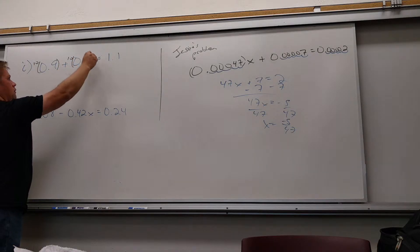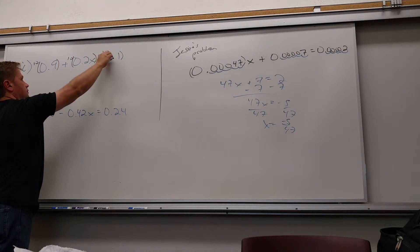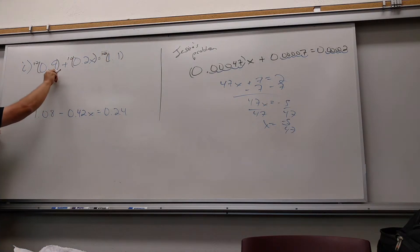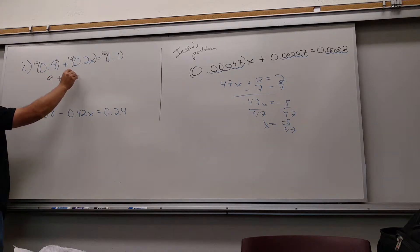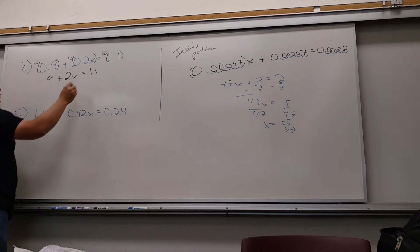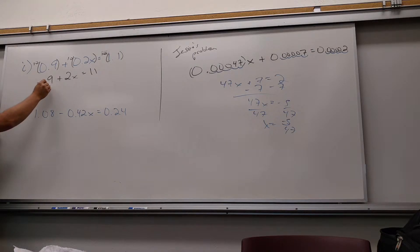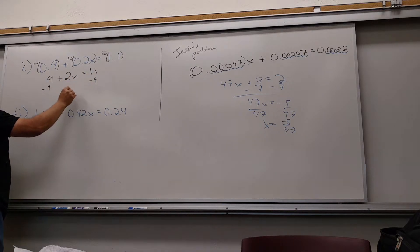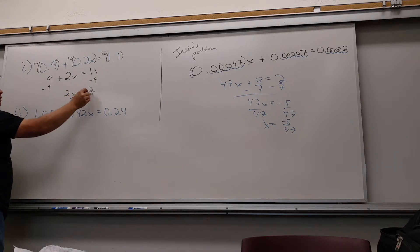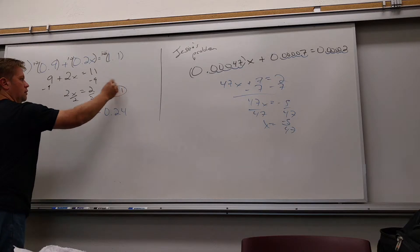Multiply by ten. So guys, on this first one, what would you multiply by? Ten. So multiply each thing by ten. So then this becomes 9 plus 2x. And now this should be the easy step. So what do you do? Subtract nine. Two. Divide everything by two.